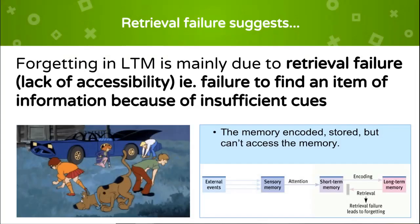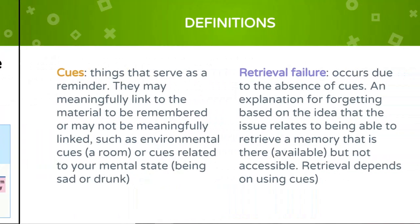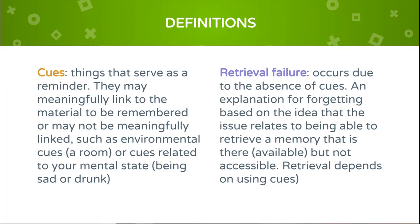Retrieval failure is where information is available in long-term memory but is inaccessible and cannot be recalled because of the absence of appropriate cues. Types of cues that have been studied by psychologists include context, state, and organization.